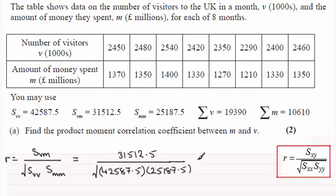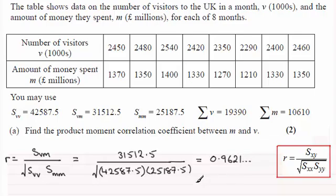If you do this on your calculator you're expecting a positive value less than or equal to 1. It turns out to be 0.9621, and rounding to three significant figures that gives 0.962 — 3SF for short.